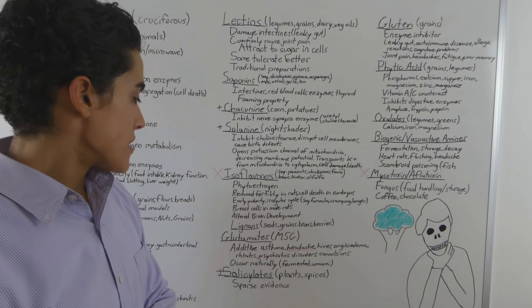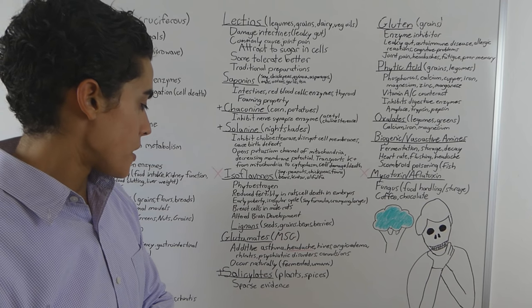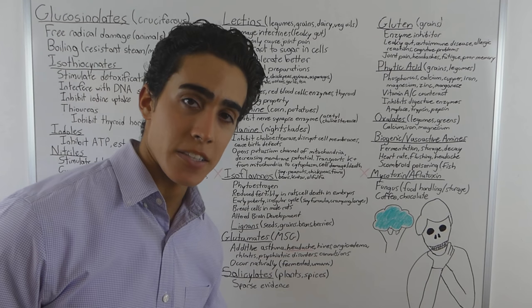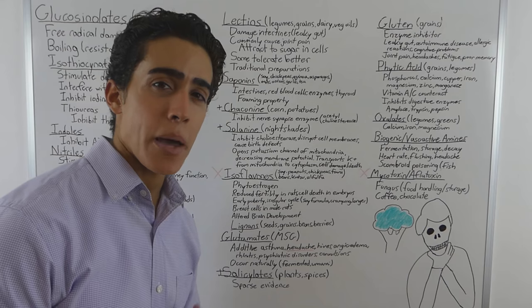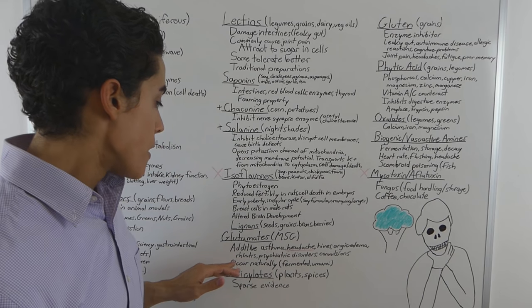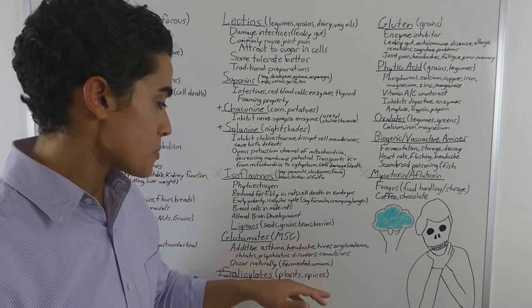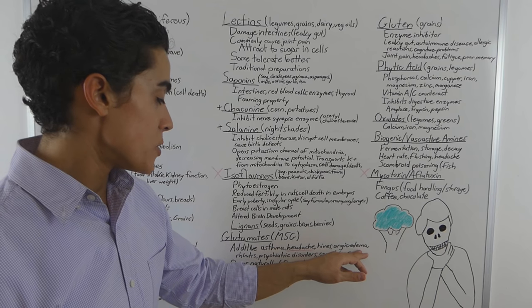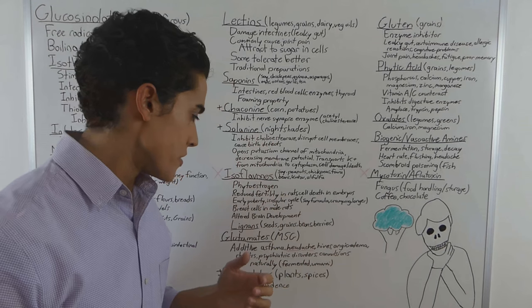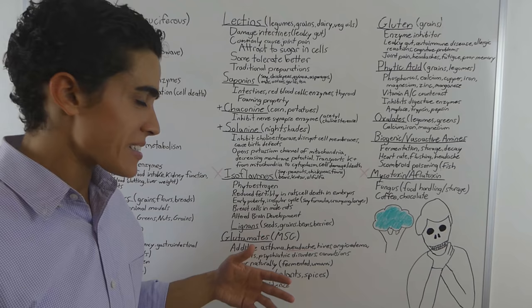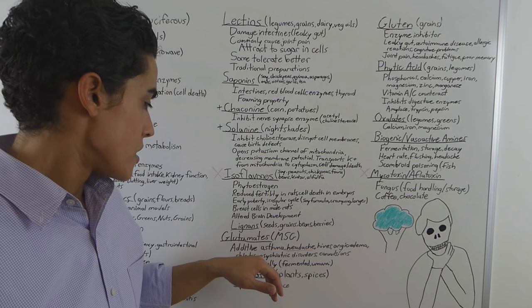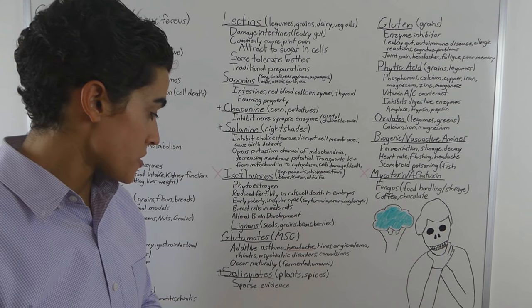Glutamates, MSG. This isn't really that big of a topic, but this is mostly focusing on the additive of MSG. Not the MSG that naturally occurs in foods. The additive can be associated with asthma, headache, hives, angioedema, swelling of the skin. Just various skin inflammation too, rhinitis, psychiatric disorders and convulsions in some cases.